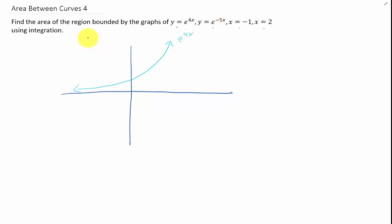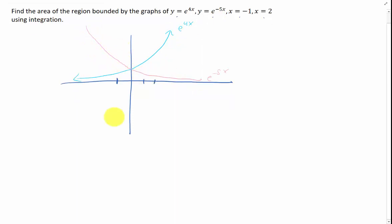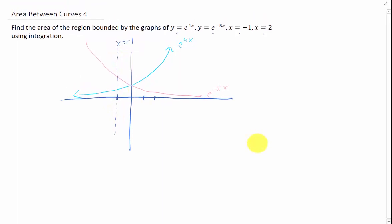e to the negative 5x looks something like this. x equals negative 1 is going to be this vertical line right here. And x equals 2 is going to be this vertical line over here.